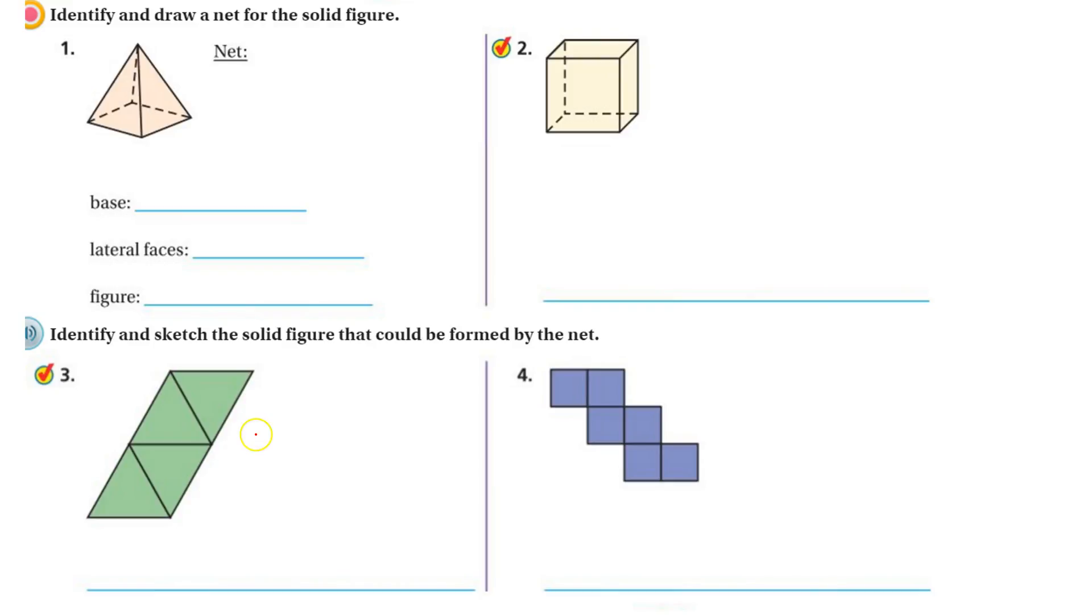So the base is a rectangle, or you could say it's a square. Lateral faces are triangles, so we know it's a pyramid. What kind of pyramid? A rectangular pyramid because it's named after its base.